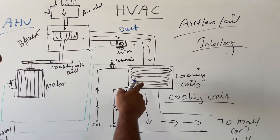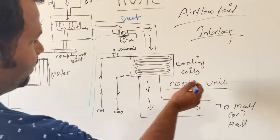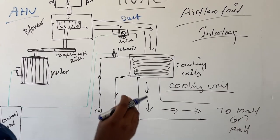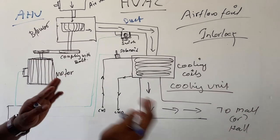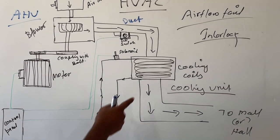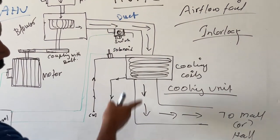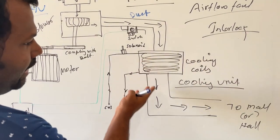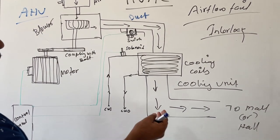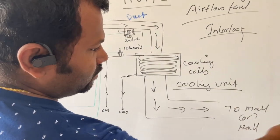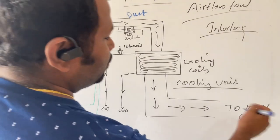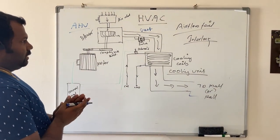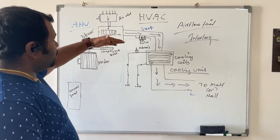That air will be passed through the cooling coils. The cooling coils will be circulated by chilled cooling water or cooled gases, depending upon the cooling system. When this air passes through the cooling coil, the cooling will be absorbed by the air and it will be passed to the room or whatever area it is supplying.